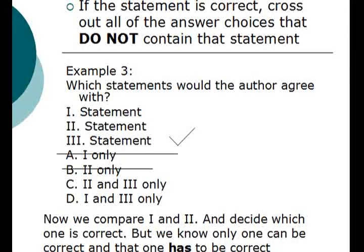Different questions, depending on how the answer choices are set up, will give you different types of information. Say our starting point is statement three and we are sure that it is correct. We follow the same step and cross out the answer choices that do not contain statement three, leaving us with answer choices C and D. However, we must still evaluate statements one and two and decide which one is correct. But now we have more information because we know only one can be correct, so we choose the better between the two.